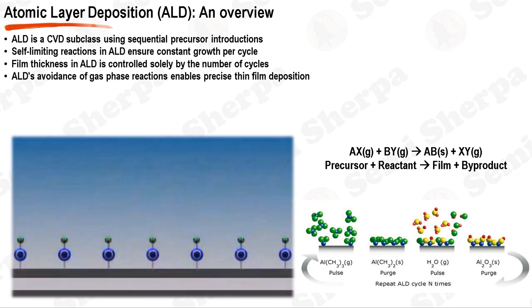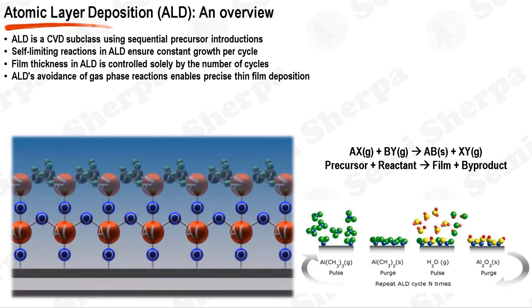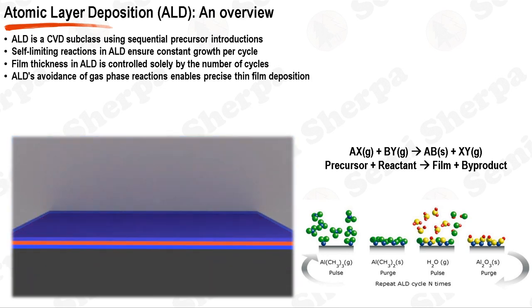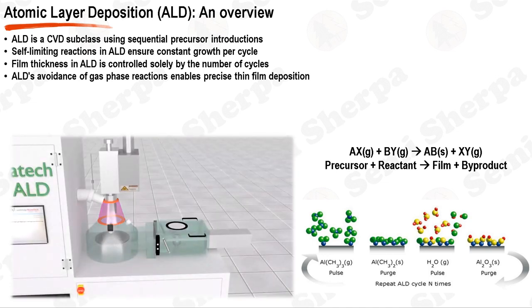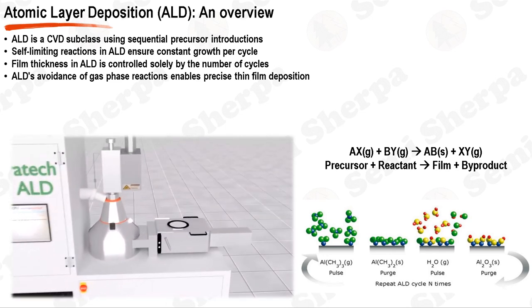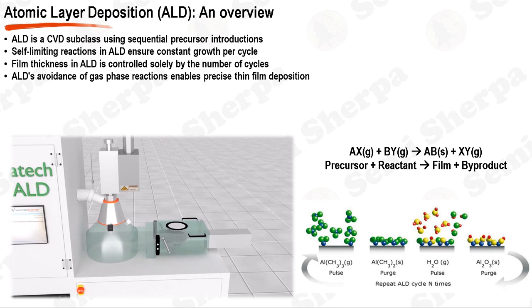The ALD cycle for Al2O3 deposition consists of four main steps. The process begins with the introduction of the TMA precursor into the reaction chamber. This precursor reacts with the surface of the substrate, forming a layer of Al atoms and releasing methane gas. This is a self-limiting process, meaning that once all the available surface sites are occupied by the precursor, no further reaction occurs, ensuring an even, atomic layer of coverage.